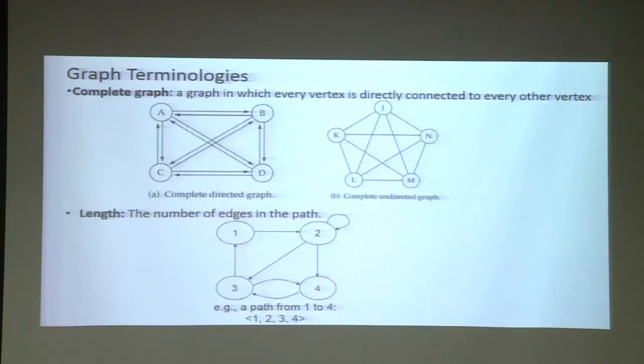Length simply refers to the number of edges. Number of edges represents the length of the graph. If you want to move from vertex 1 to vertex 4, you have two paths: either directly 1 to 4, or 1-2-3-4. Two alternate paths are available.